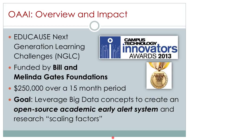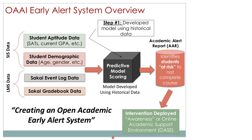The OAI project was originally funded through the Educause Next Generation Learning Challenges Program, which received funding from the Bill and Melinda Gates Foundation. We had about a quarter of a million dollars over roughly two years. The goal was to create one of the world's first open-source academic early alert systems that would identify which students in a specific course were at risk of not completing it successfully — doing that early in the semester, targeting the first two to three weeks of a traditional 15-16 week course — and then roll out interventions to help those students.